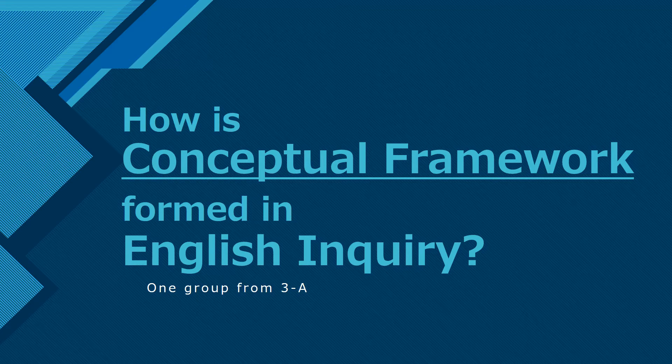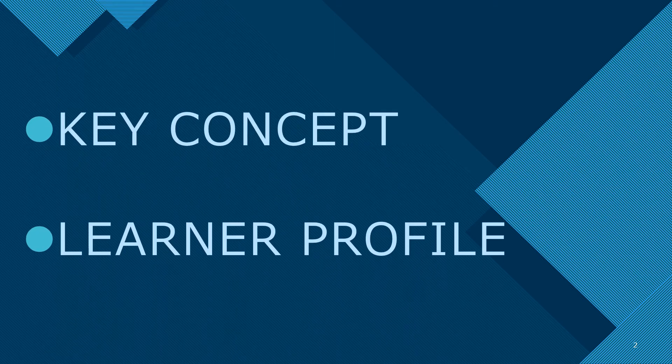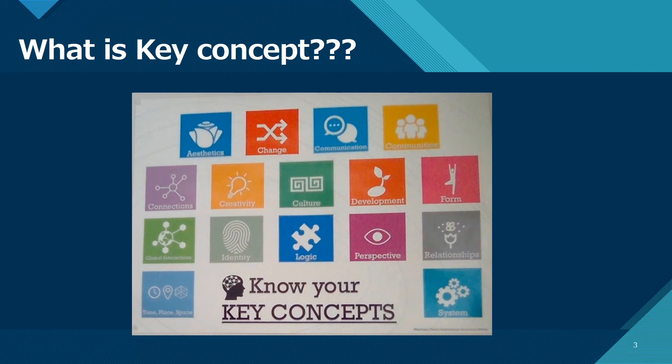In each EI unit, students select their own key concept and learner profile. We will explain about key concepts. These icons are key concepts. We have 16 kinds of key concepts. These are very important because we can know the skills that we can get from that unit.